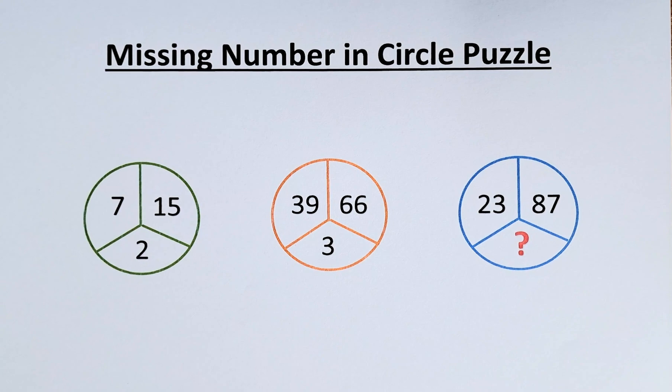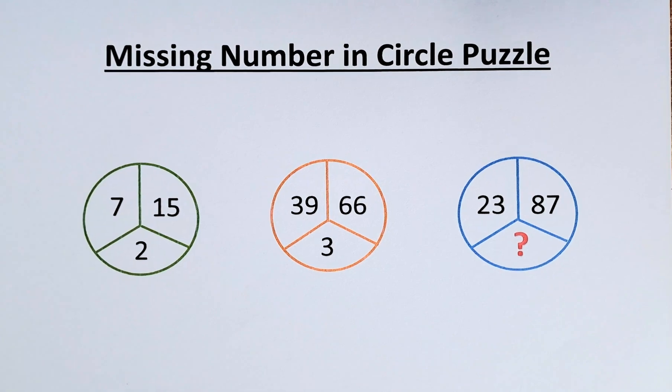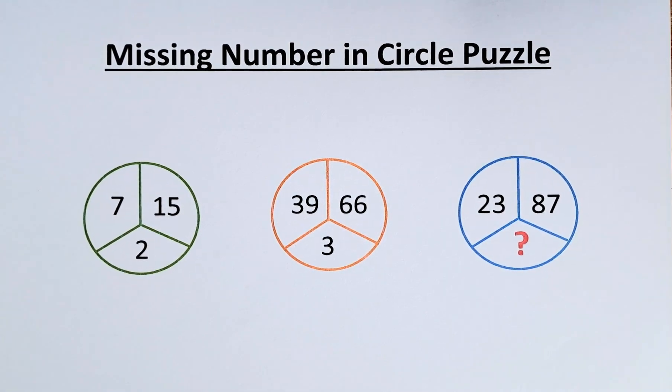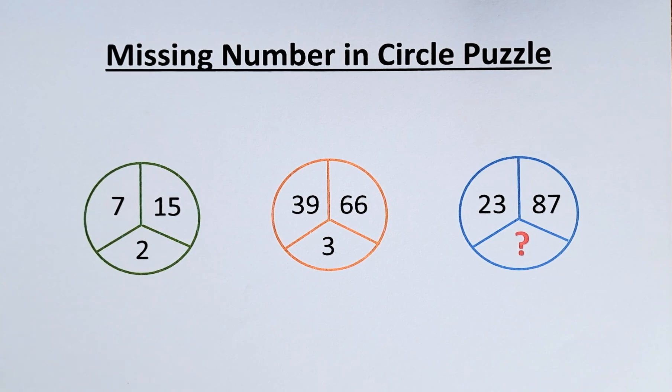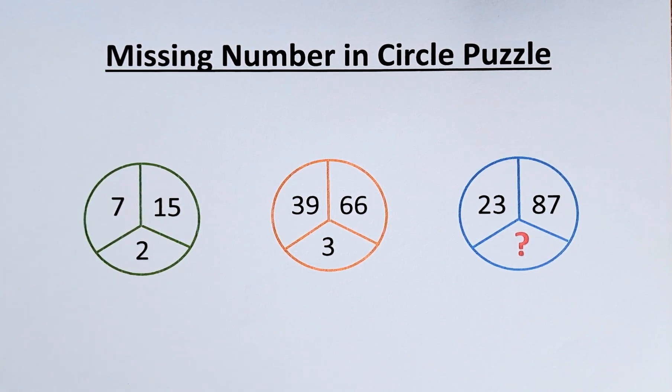This is the solution to the missing number in the circle puzzle. The numbers are as follows: 7, 15 and 2 in the green circle, 39, 66 and 3 in the orange circle, and 23, 87 and a question mark in the blue circle. We are required to find what the question mark represents. So without further ado, I'll give you the solution now.